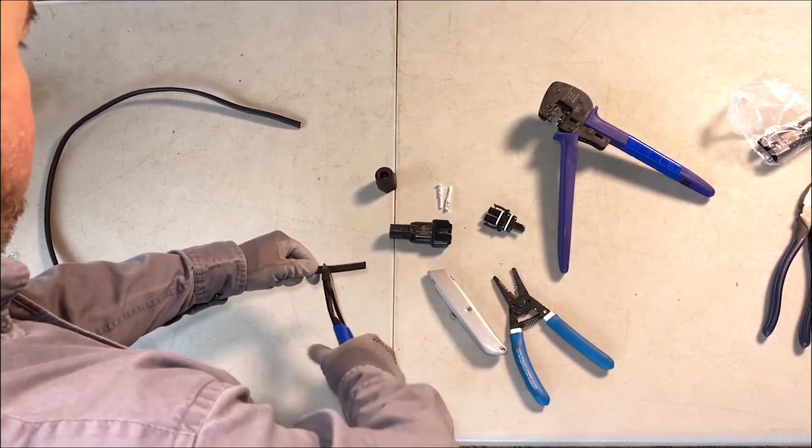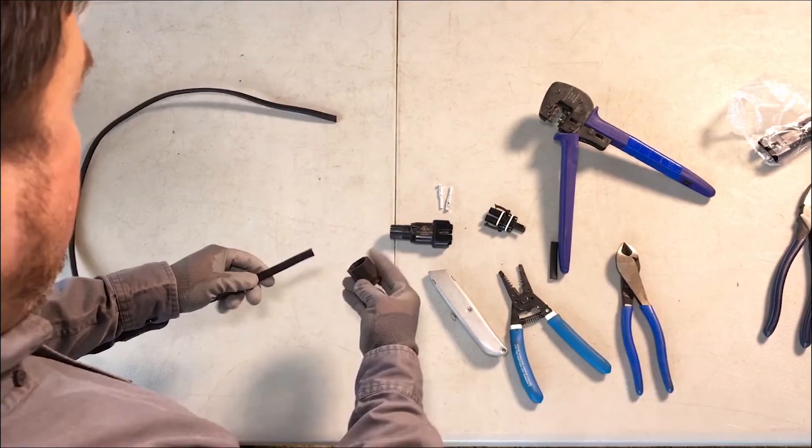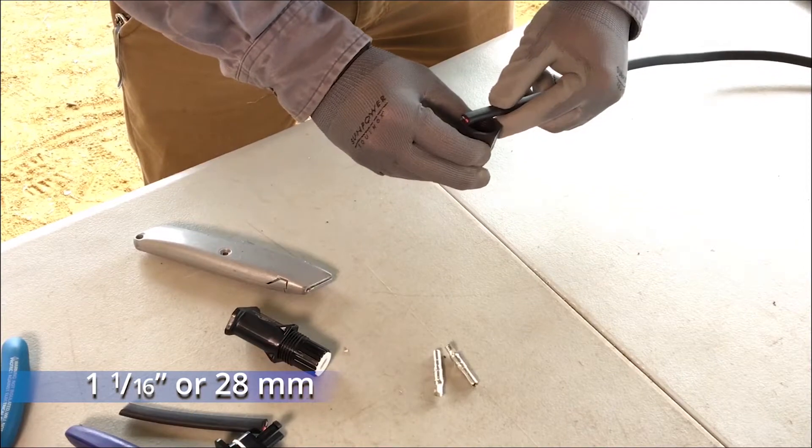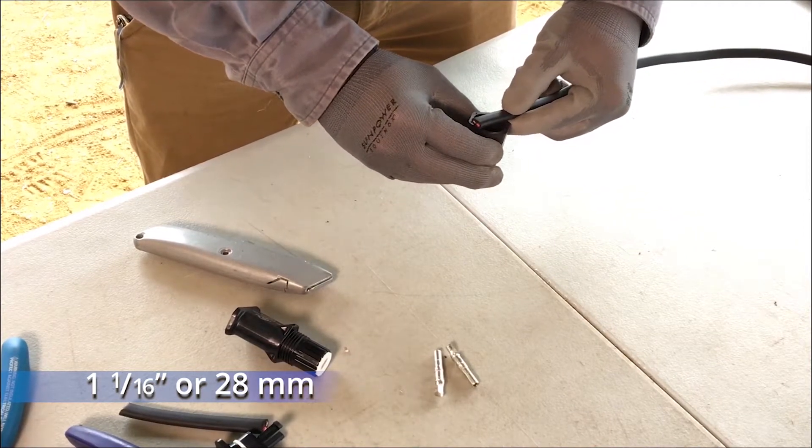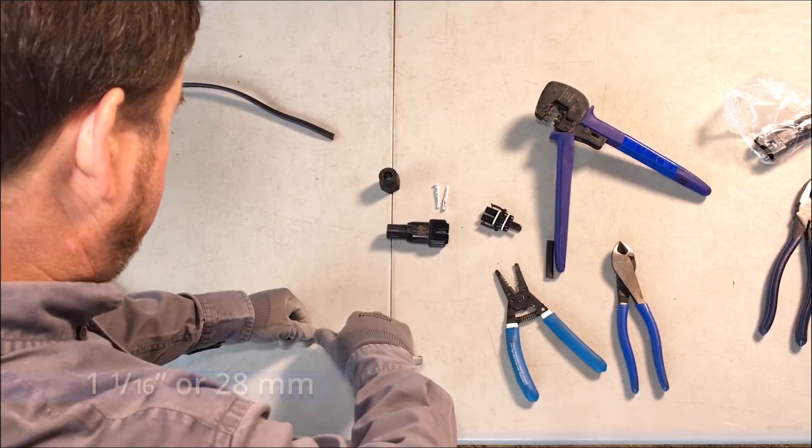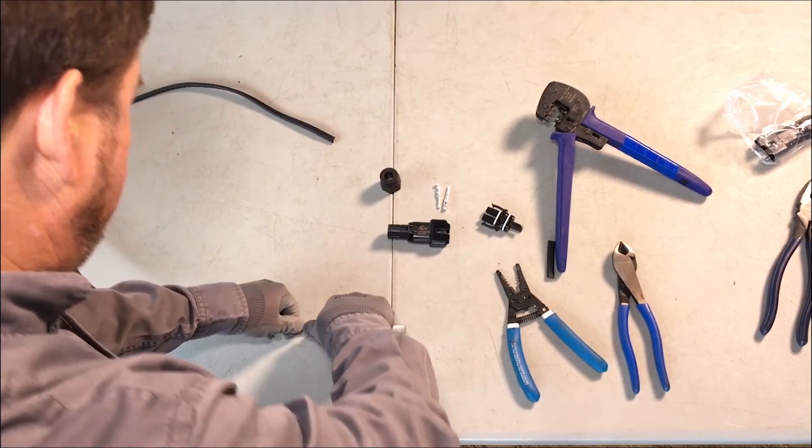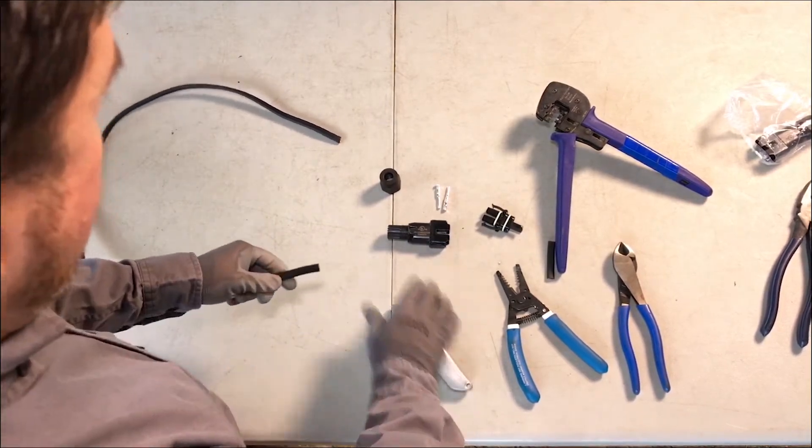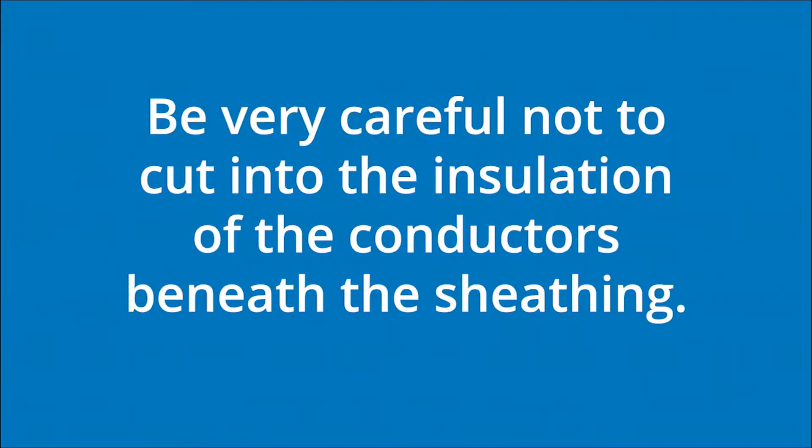The connector nut width doubles as a jig for how much wire to strip from the outer trunk cable. Measure with the nut and then use the razor knife to strip 1 and 1/16th of an inch of the black outer jacket from the cut end of the cable in order to expose the black and red conductor insulation. Be very careful not to cut into the insulation of the conductors beneath the sheathing.